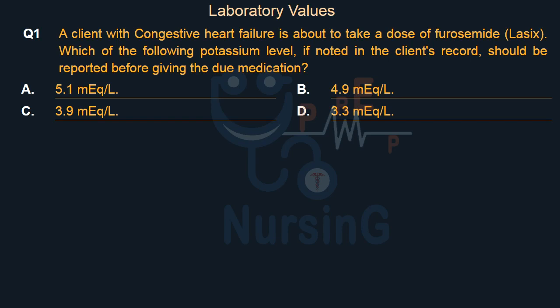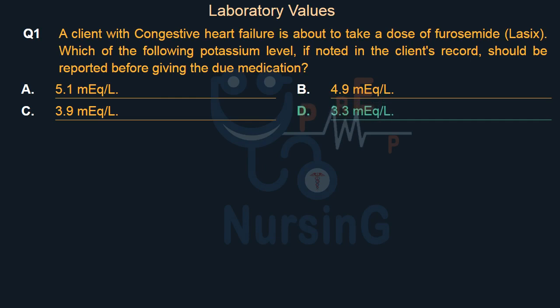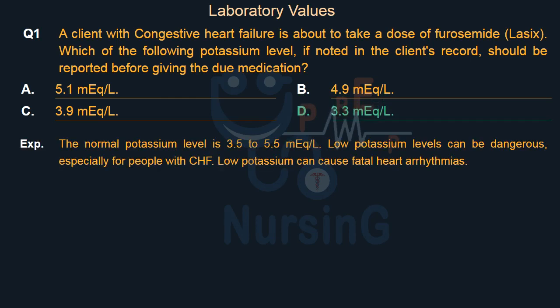The right answer is Option D: 3.3 mEq/L. The normal potassium level is 3.5 to 5.5 mEq/L. Low potassium levels can be dangerous, especially for people with CHF. Low potassium can cause fatal heart arrhythmias.